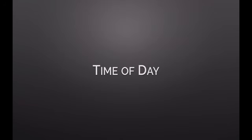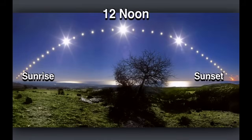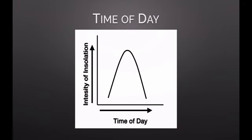The next factor is the time of day. Insolation, no matter what season you're in, is always lowest in the morning and late afternoon, and highest at noon. As the sun rises it's at a lower angle — lower angle means less heat. At noon the sun is at its highest, most direct position no matter where you live, so you get the most focused rays. At sunset it's back down low, so you get much less focused rays. As time of day increases toward noon, sunlight intensity increases; then it decreases through the afternoon.